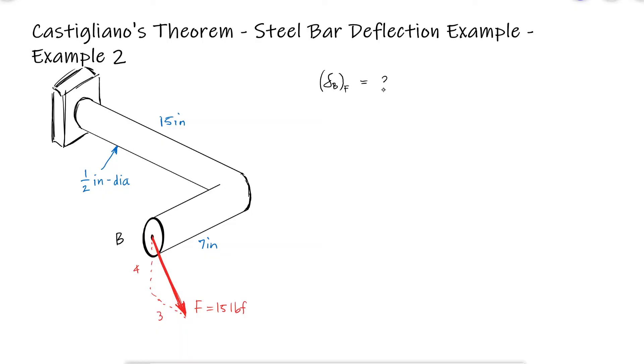We know that we can calculate this deflection in the direction of F if we take the partial derivative of the strain energy with respect to F. Since the steel bar has two sections, BA and AO, we'll divide the strain energy into two expressions, one for each.